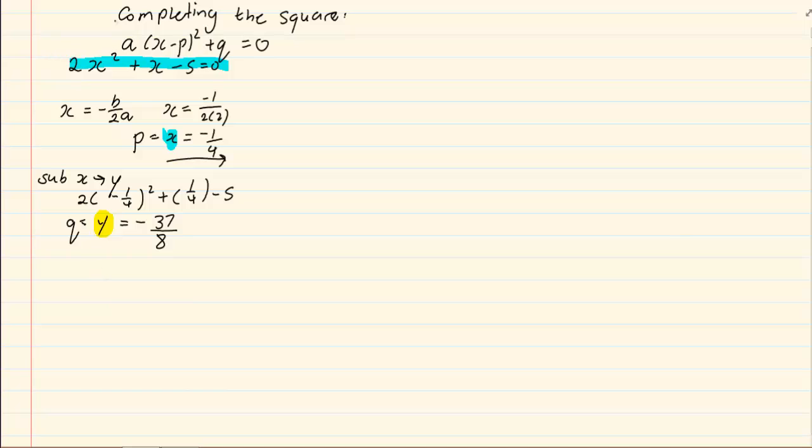So we have 2 coming from our original question into x minus and then we have minus a quarter all squared minus 37 over 8 is equal to 0. Now remember, the reason it is a negative is because the positive times the negative would give us a negative.